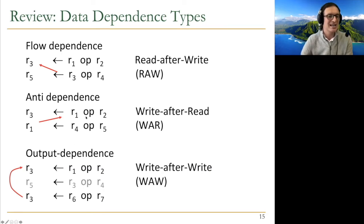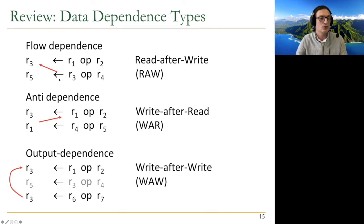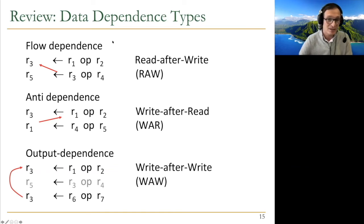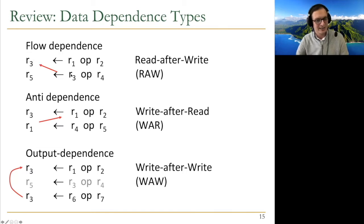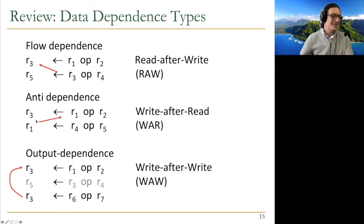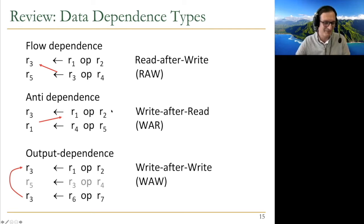Someone asks why it's called anti-dependence. The reason I think it's called anti-dependence is: in a flow dependence you write to R3 and then read from R3 later. In anti-dependence you read from R1 and write to R1 later — it's the opposite of flow dependence in a sense. Output dependence is a better name — you're clearly dependent on an output.